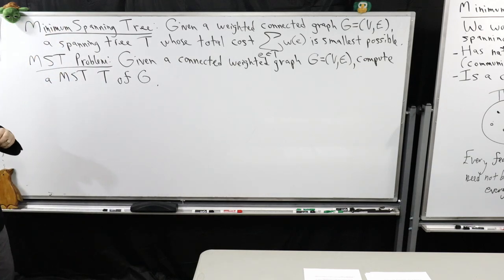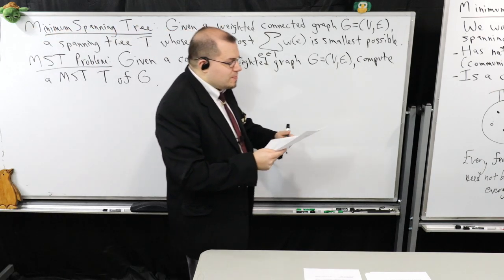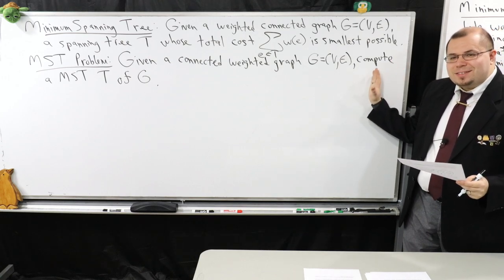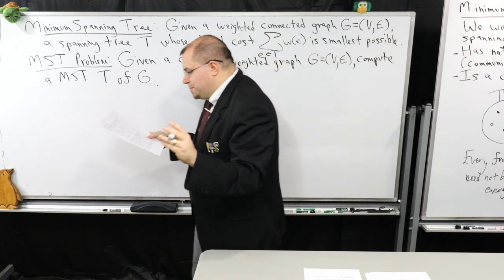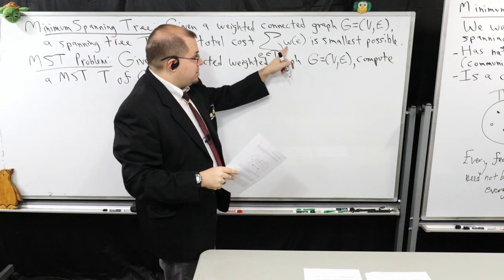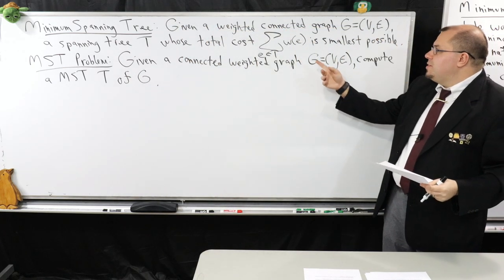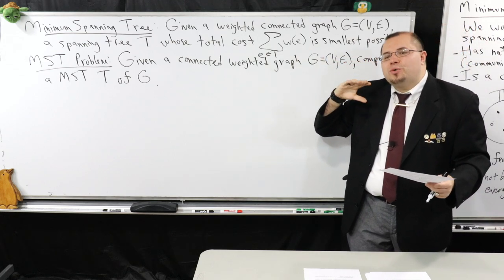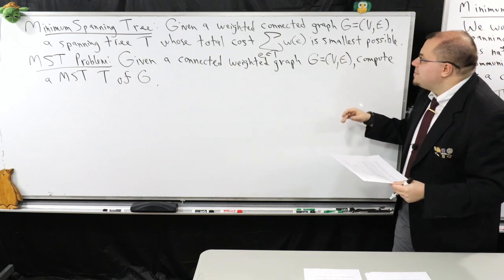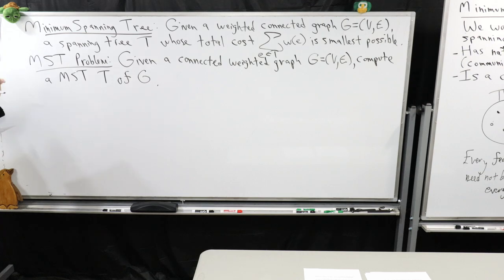That's our problem. The weight function W(V) is just the weight of the edge — those are the numbers on the edges for our weighted graph. I'm just simply summing over all of those, just like in the example we did a moment ago.